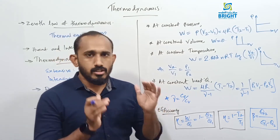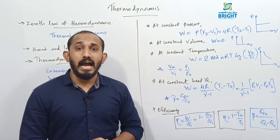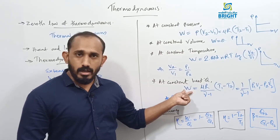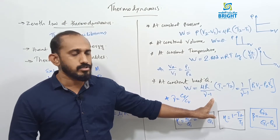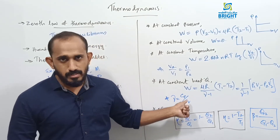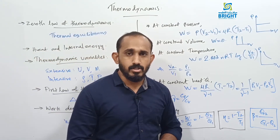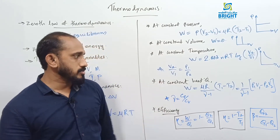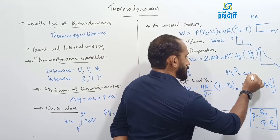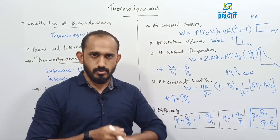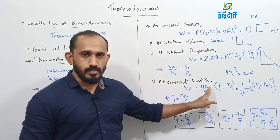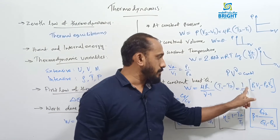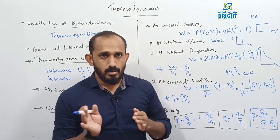For an adiabatic process, where no heat flows in or out of the system, the work done is W = μR(T1 − T2)/(γ − 1). Here, γ is the ratio of molar specific heat capacities Cp and Cv, i.e., γ = Cp/Cv. For an adiabatic process, PV^γ = constant is the relation between pressure and volume. In terms of pressure and volume: W = (1/(γ − 1))(P1V1 − P2V2).